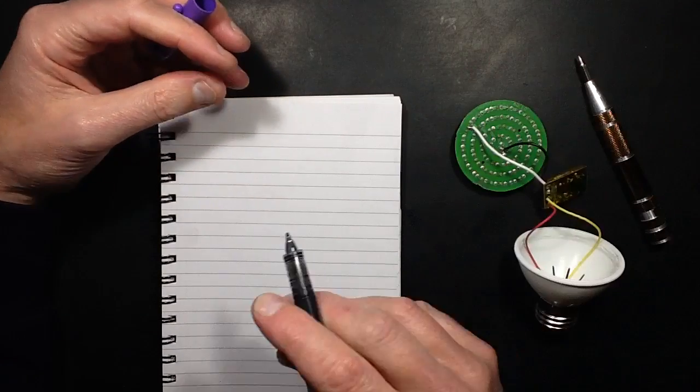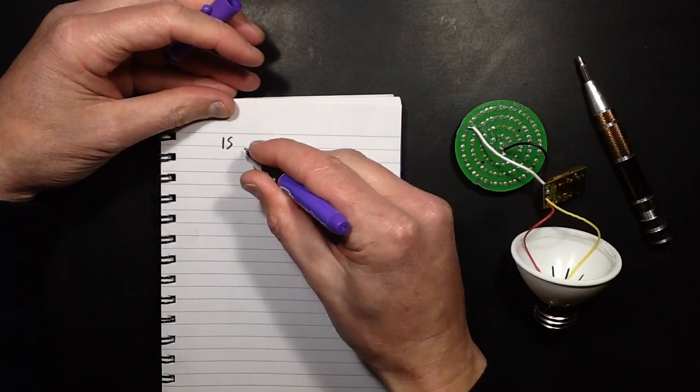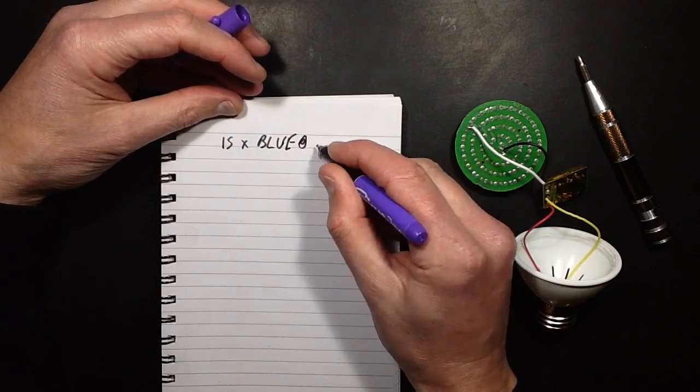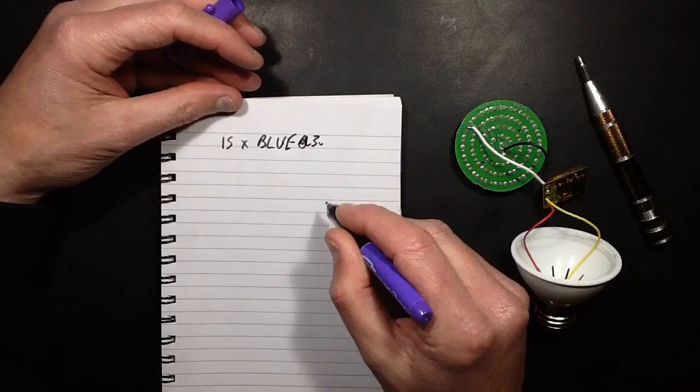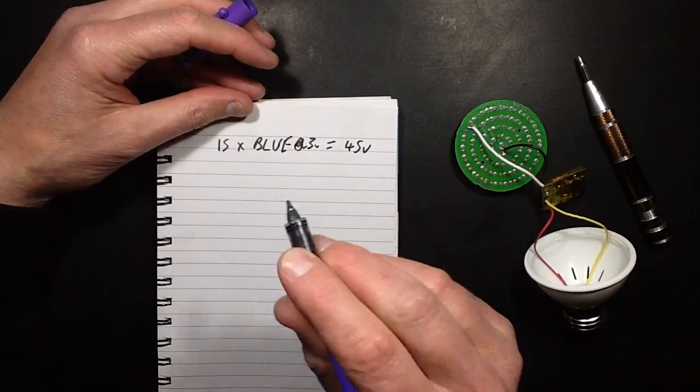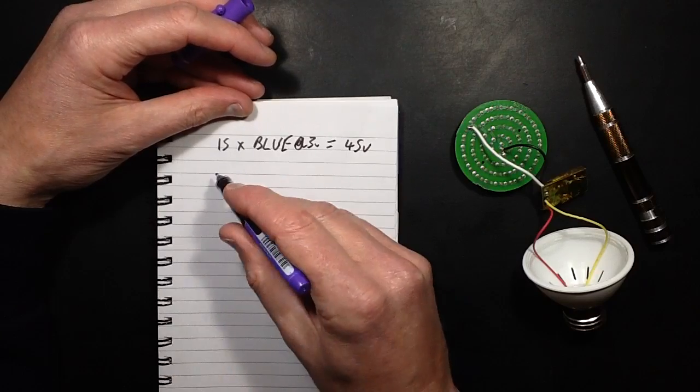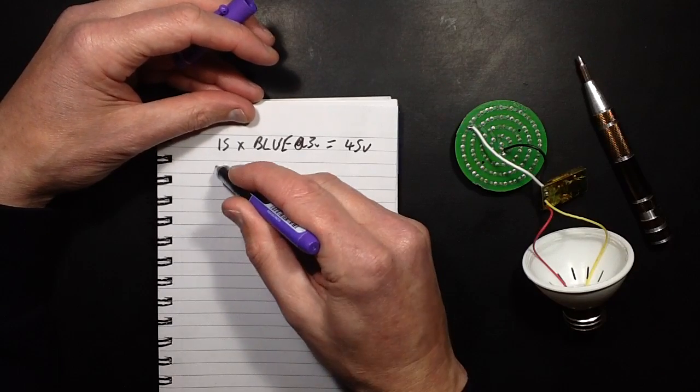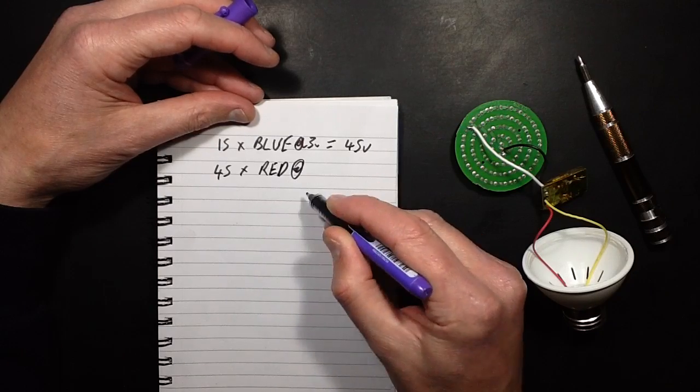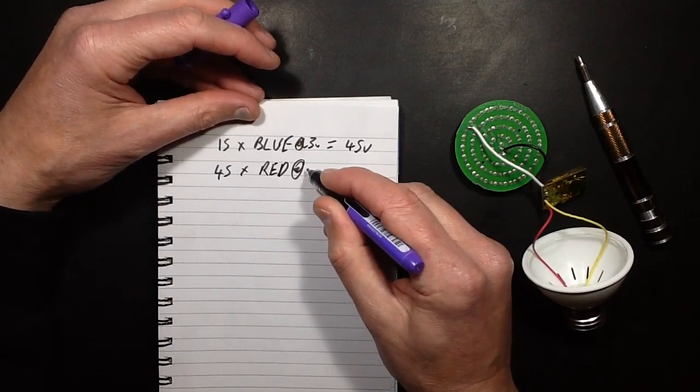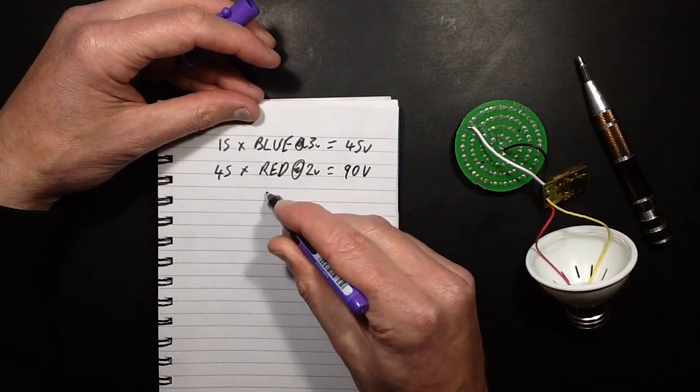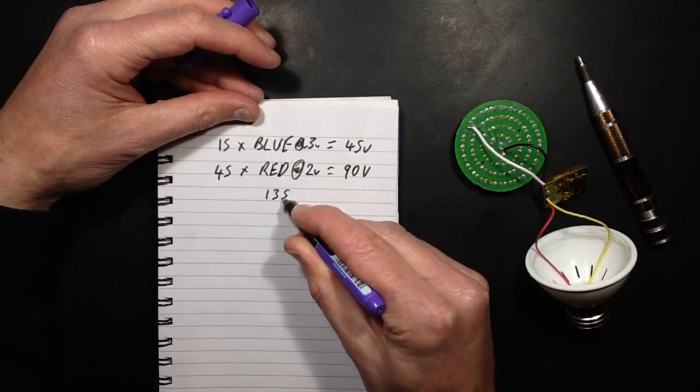So we've got 15 times blue at roughly about 3 volts each equals 45 volts. We'll measure this though, we'll test it. And we've got 45 times red at roundabout, that can vary, that can be 2 to 2.5 volts, but I'll say 2 volts equals 90 volts. So a combined forward voltage of 135 volts.